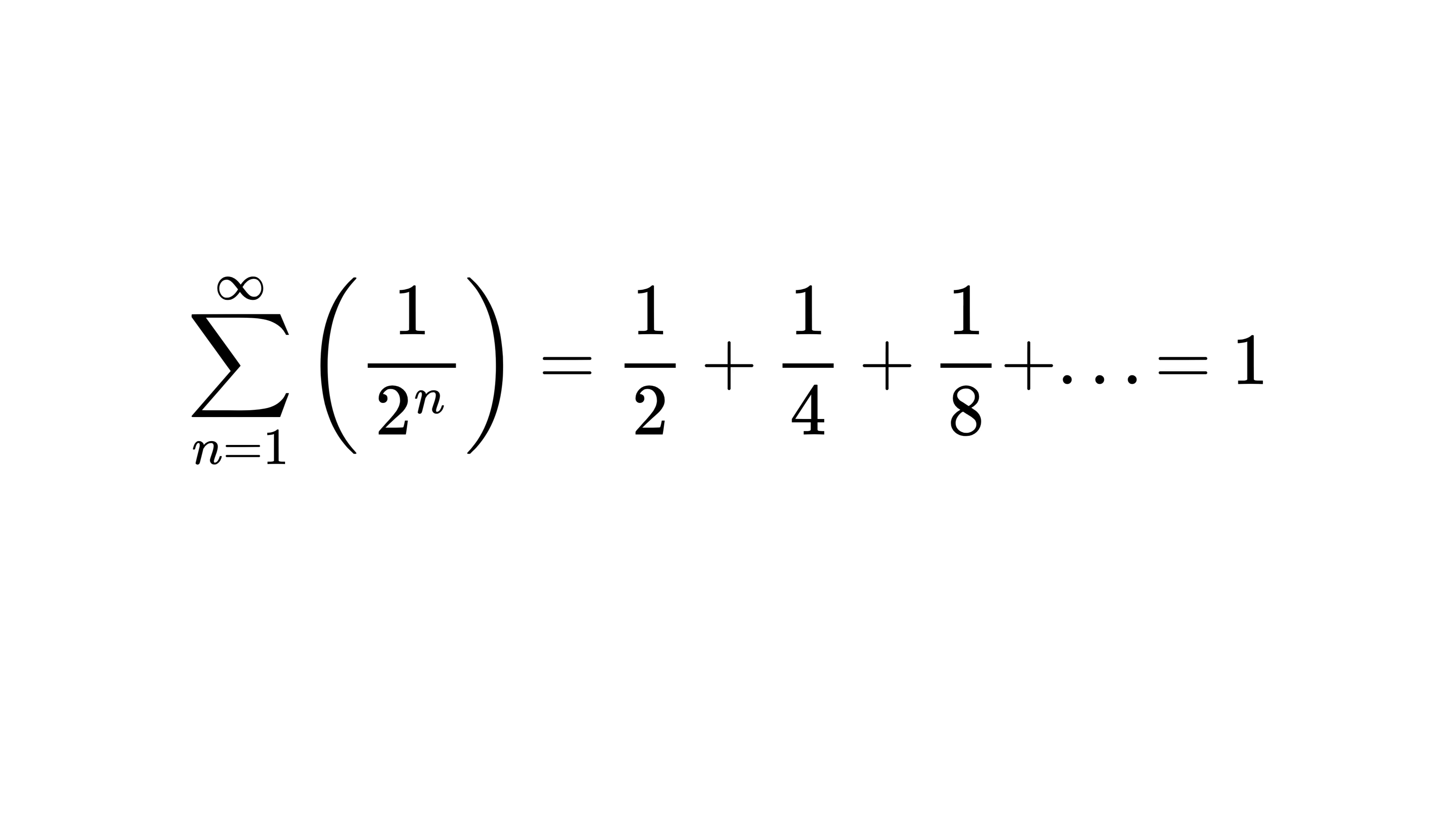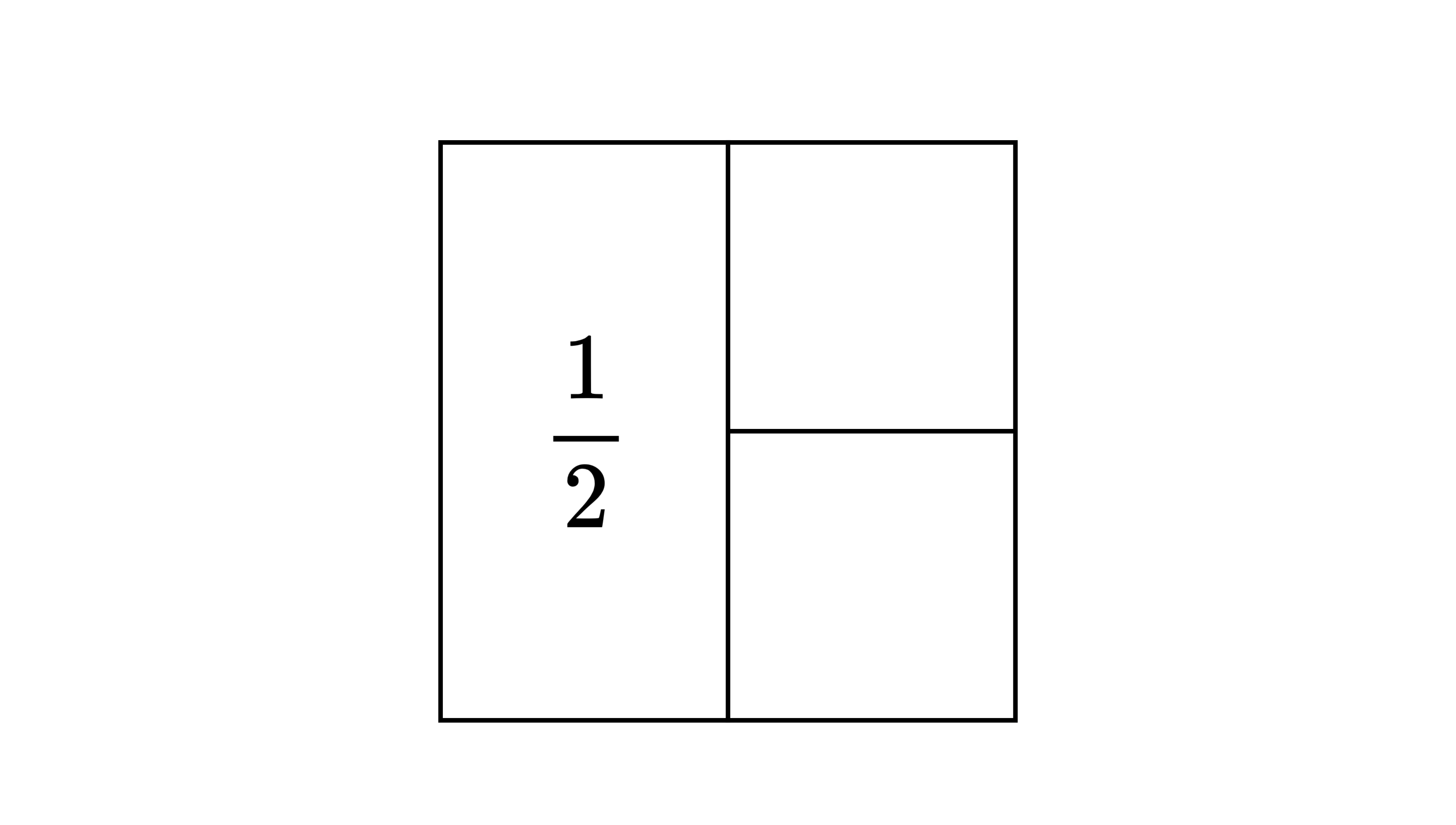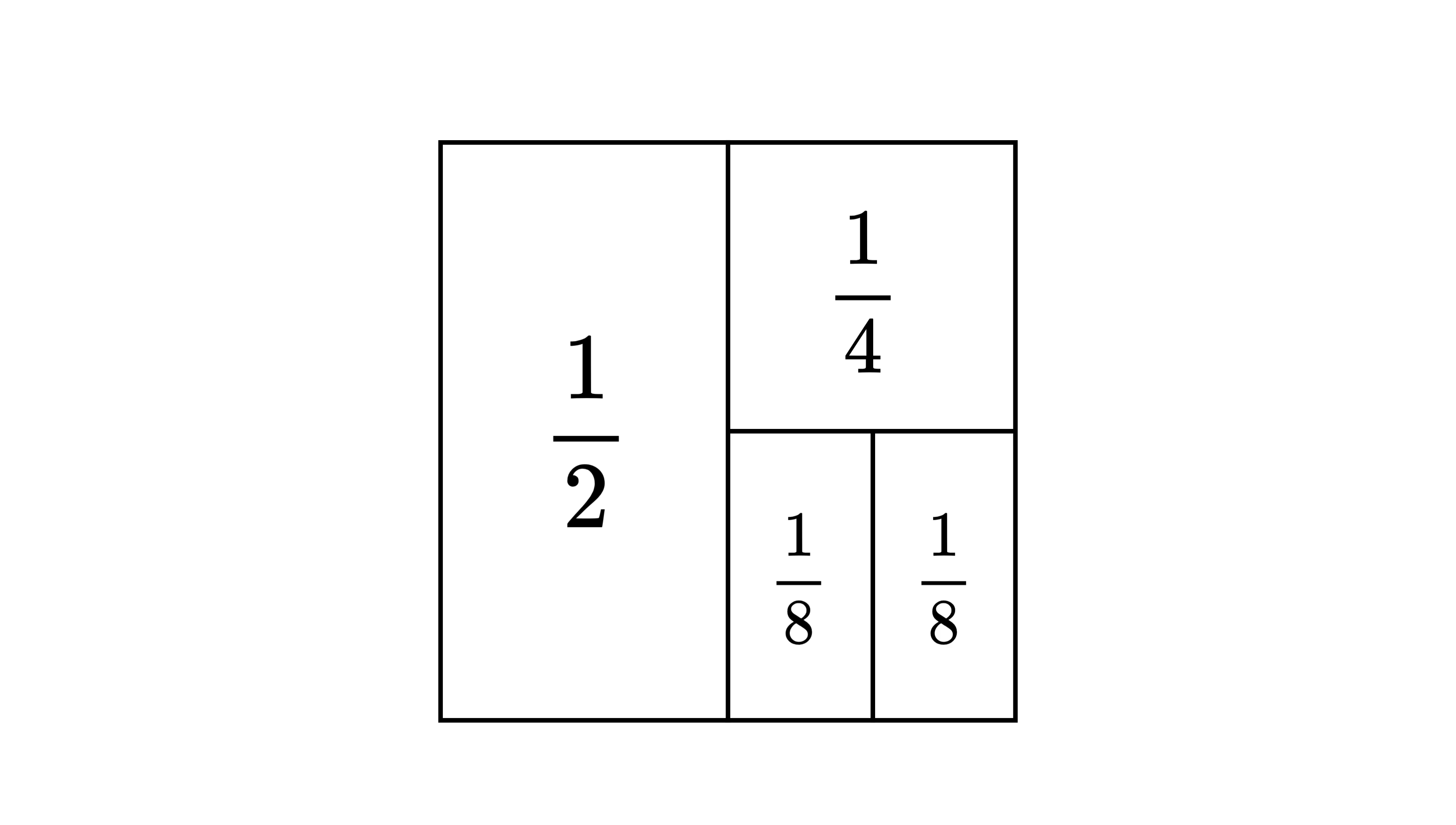Take a square of side length one; its area will be equal to one, right? Now divide this square in half, so both these rectangles will have an area of 1/2. Next, take one of those halves and divide it again into half. Now you have two rectangles, each having area 1/4. Keep going like that. Take one of this 1/4 and divide it into half to get 1/8.